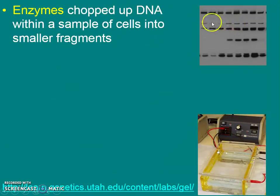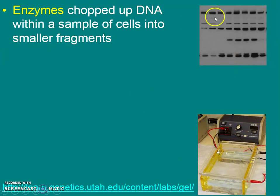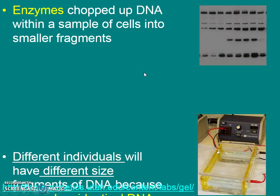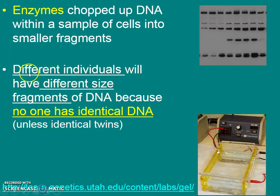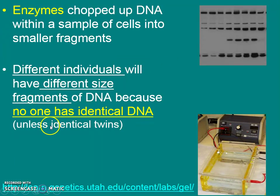We use an enzyme to chop up DNA from a crime scene — for instance, a blood sample, hair sample, or skin sample. Those enzymes karate-chop the DNA into pieces. We can then use an electrical current to move them across a jello-like substance. Each different person on the planet will have different-size fragments because the enzyme will chop in different places. No one has these fragments exactly alike unless they're identical twins.